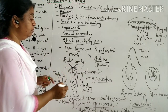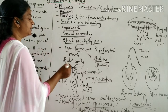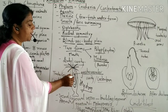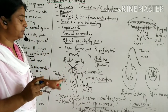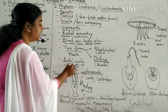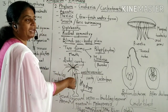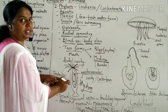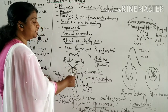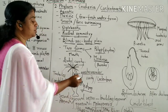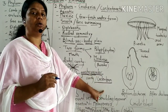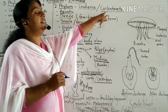The body cavity of these animals is also called the gastrovascular cavity, because this cavity performs two functions: digestion as well as circulation. Food enters through the mouth, is digested in this cavity, and the digested food is absorbed into the body — so it serves both digestive and circulatory functions. This cavity is also called the coelenteron, which is why the phylum is called Coelenterata.